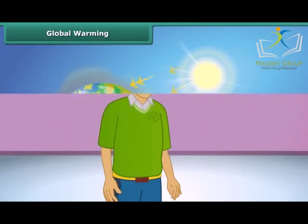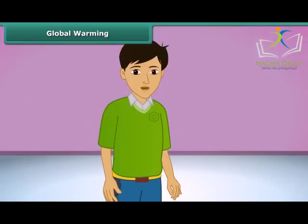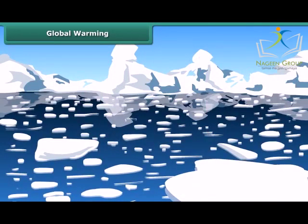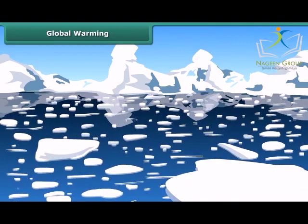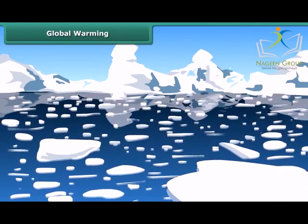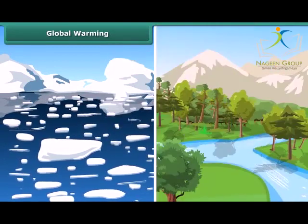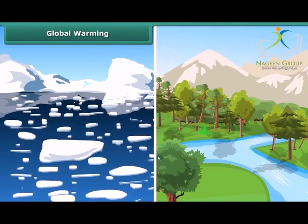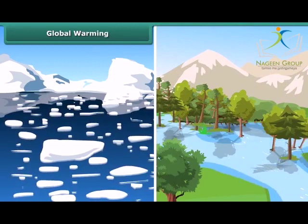Can you imagine the consequences of heating of Earth's atmosphere? It will melt the ice at the poles, causing sea levels to rise, which could flood the low-lying areas, thus affecting the habitats of plants, animals, and people.